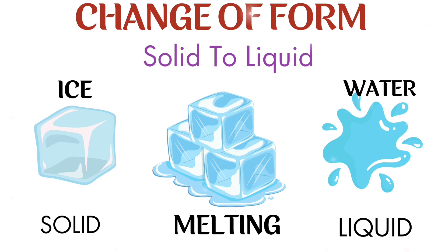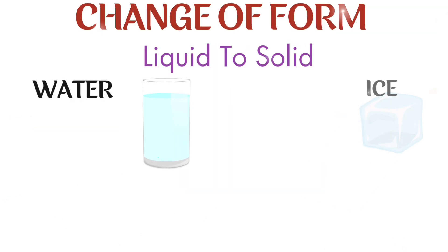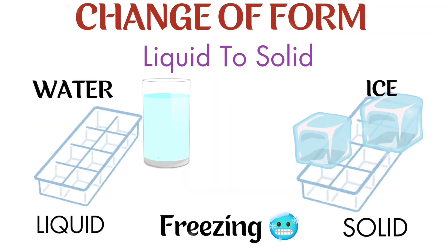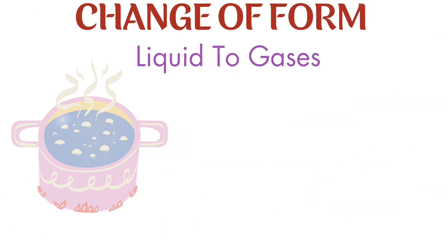The process of change from solid into liquid is known as melting. Now, what is meant by freezing? The process by which a liquid changes into its solid form is called freezing. The temperature in the freezer is very low, and at a low temperature, water kept in a container — like an ice cube tray — changes into ice.